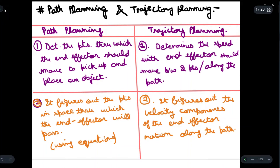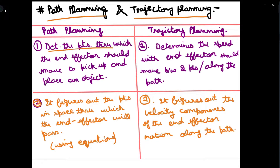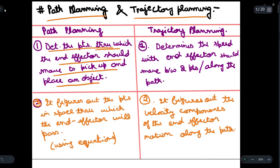Today we are going to discuss path planning and trajectory planning — the difference between the two and what they mean. In path planning, we will determine the points through which the end effector should move to pick up and place an object. We only find out the points from where an object will move from one position to another. In trajectory planning, we also find out the speed or velocity with which the end effector will move.